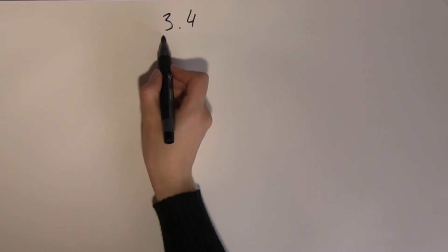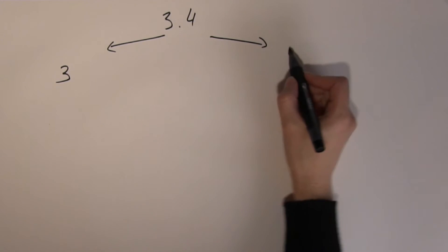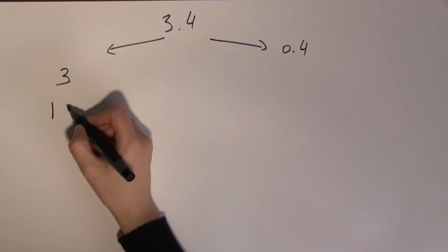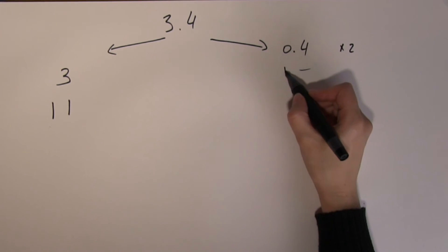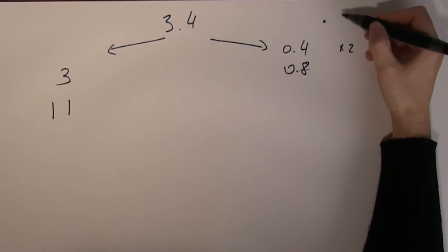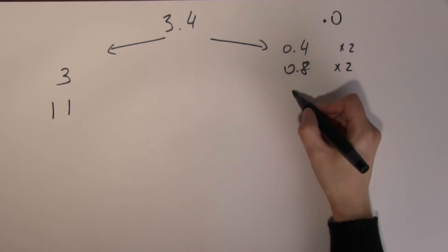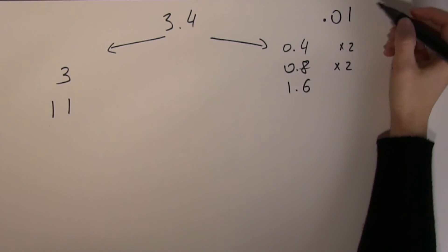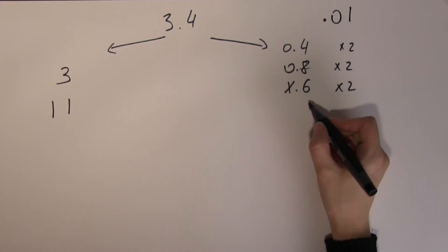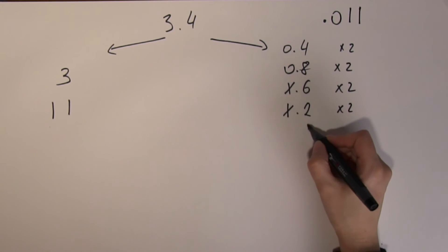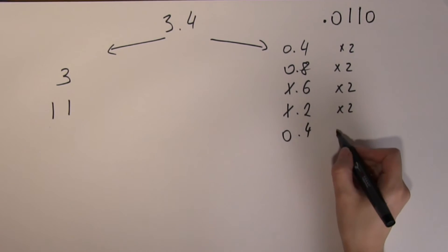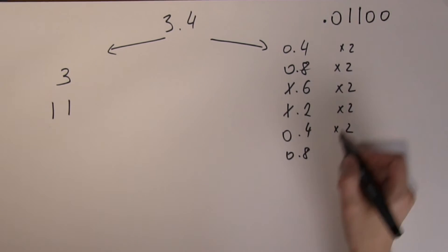Now let's look at a nice and easy decimal number, the one we didn't quite know how to deal with at the end of the last video: 3.4. Separate into whole and fractional parts. 3 is 2 plus 1, which is 11 in binary. The fractional part: 2 times 4 is 0.8, so after the radix point the first digit is 0. 2 times 8 is 1.6 — next digit is 1. 2 times 6 is 1.2 — carry the 1. Double of 2 is 4, no carry. Double of 4 is 8, no overflow.